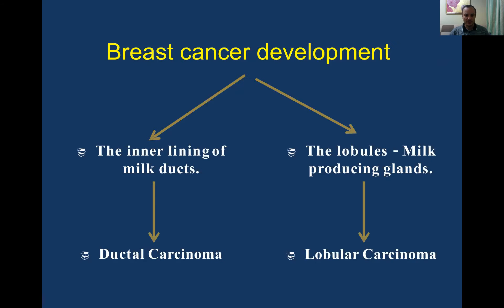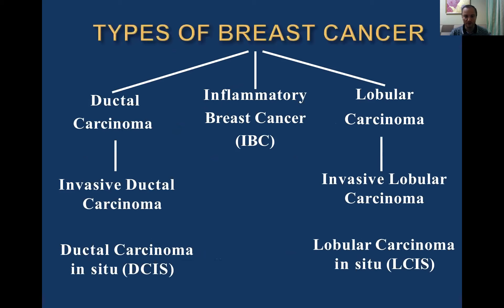Breast cancer can develop from the epithelium of the inner lining of milk ducts or of the lobules. That's why it may be ductal carcinoma or lobular carcinoma. There are three types of breast cancer: ductal carcinoma, inflammatory breast cancer as a separate type, and lobular carcinoma. Ductal carcinoma may be invasive or non-invasive (DCIS). Lobular carcinoma may also be invasive lobular carcinoma or lobular carcinoma in situ (LCIS). And separately, inflammatory breast cancer (IBC).